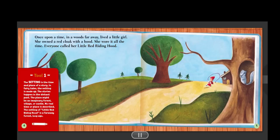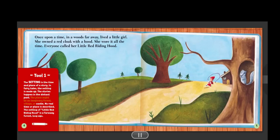Tool one. The setting is the time and place of a story. In fairy tales, the setting is made up. The stories happen in the distant past. The place might be an imaginary forest, village, or castle. No real time or place is described. The setting of Little Red Riding Hood is a far away forest, long ago.